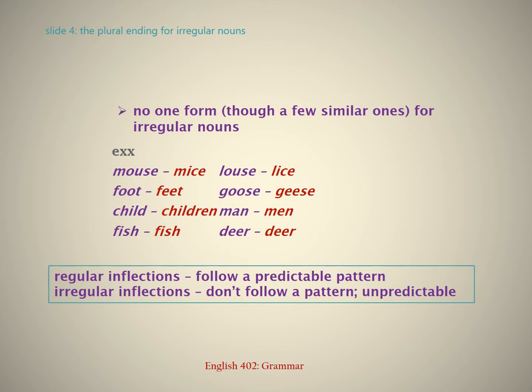Regular inflections follow a predictable pattern. Irregular inflections don't follow a pattern — they are unpredictable.